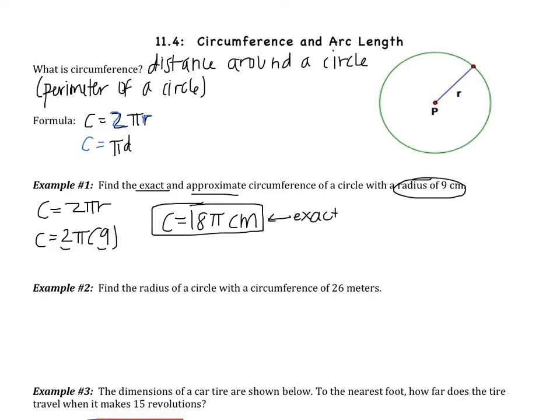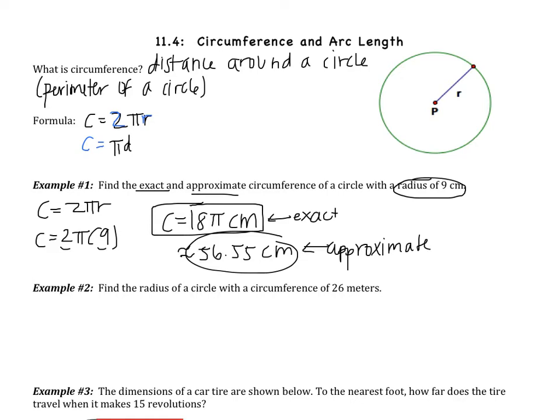We are also asked for the approximate circumference. There is a pi button on your calculator — it's right under clear. Hit second and then right under clear, and pi should come up. If you multiply by 18, this is the same as 56.55 centimeters. This is the approximate because I had to round. When I leave pi in, that's exact. When I give a decimal, that's approximate.